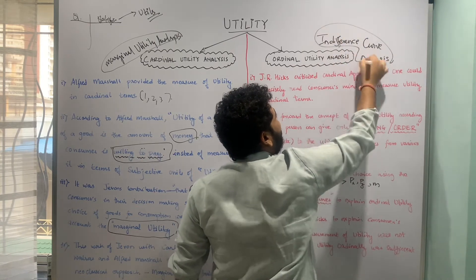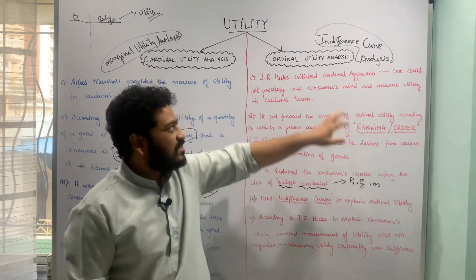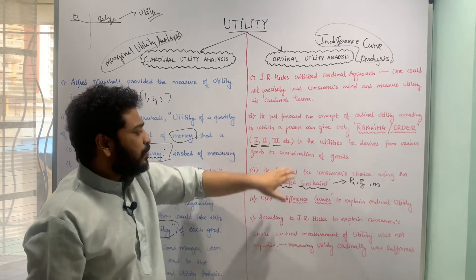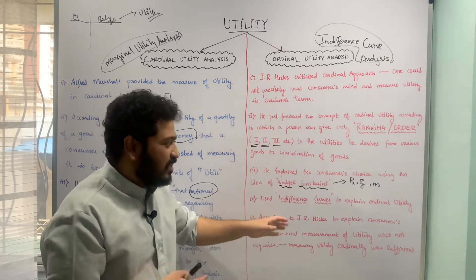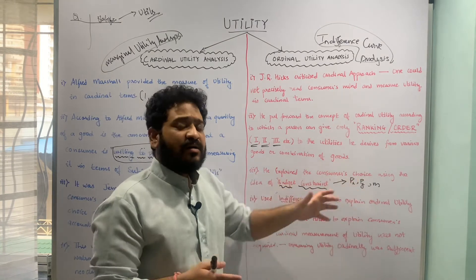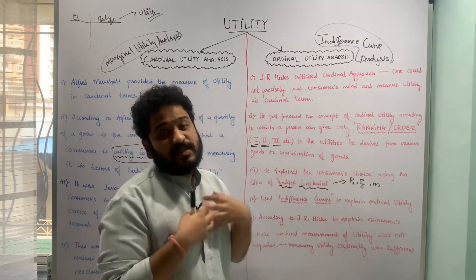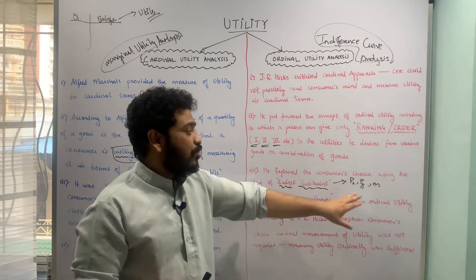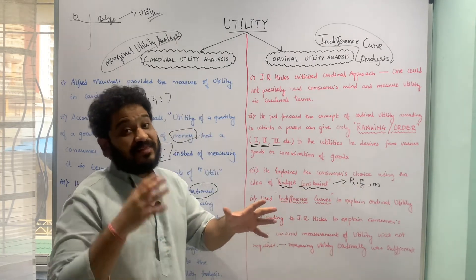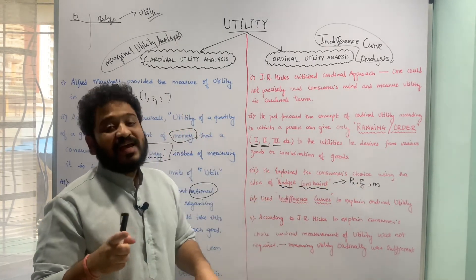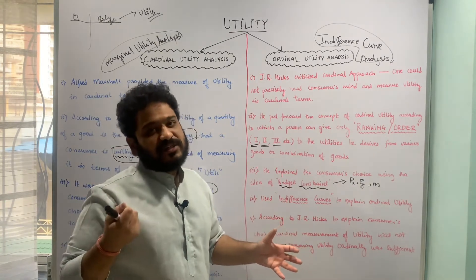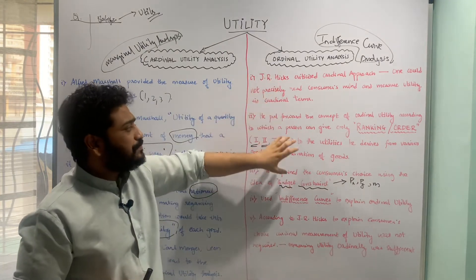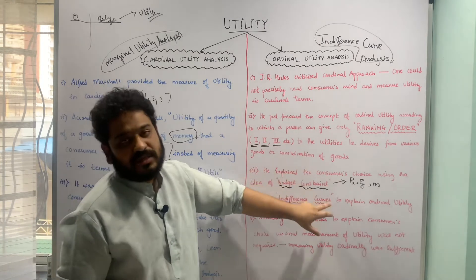Ordinal utility analysis is also popularly called the indifference curve analysis. Here, marginal utility analysis is the cardinal approach, while ordinal utility analysis is the indifference curve approach. J.R. Hicks uses the concept of budget constraint — given the prices of both goods and the consumer's money income, choices are constrained by these factors. We will see how the consumer makes choices and derives maximum satisfaction from a bundle of goods, as explained by Hicks using budget constraint.